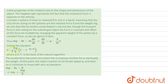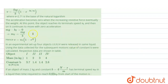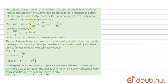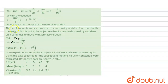Rearranging the terms and integrating, we get the expression for velocity. When the velocity is constant, the acceleration value equals zero. That constant velocity is known as terminal velocity, given as vt. So vt equals mg divided by b, since mg minus b times vt equals zero.